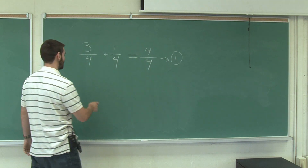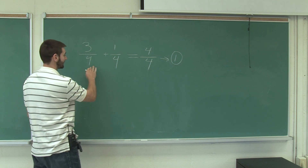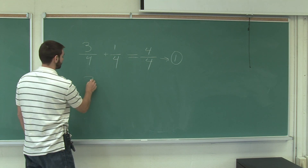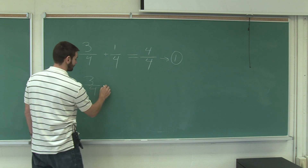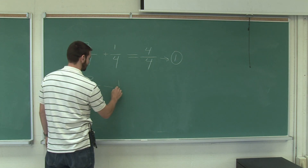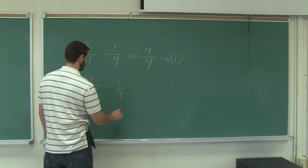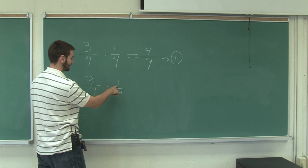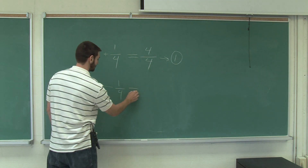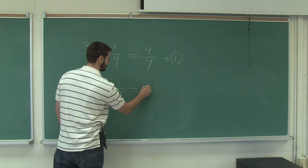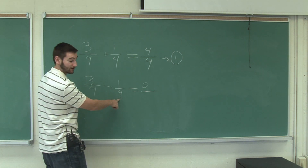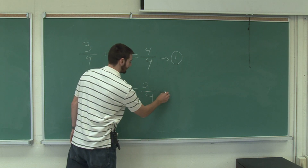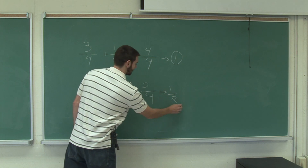For subtracting fractions it works much the same way, but it's also important that we have the same denominator. Three quarters minus 1 quarter — you just take the first numerator, subtract the second numerator: 3 minus 1 is 2. Keep the same denominator again — 2 fourths, and that is equal to 1 half.